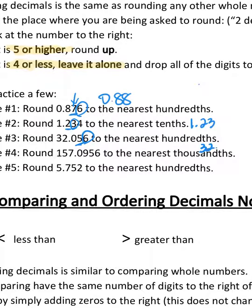Round 157.0956 to the nearest thousandth, which is going to be my five. Right next door is a six, which means that five is going to round up to a six, so I would get 157.096. And finally, round 5.752 to the nearest hundredth, which will be right there. Right next door is a two, that is four or less, so that's going to just stay 5.75. Easy, right?